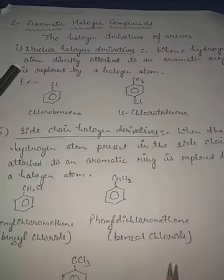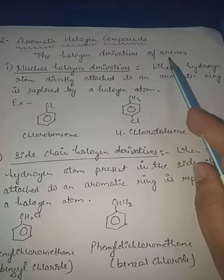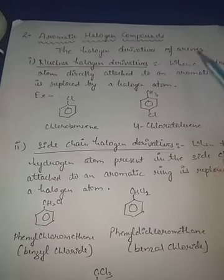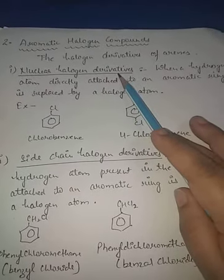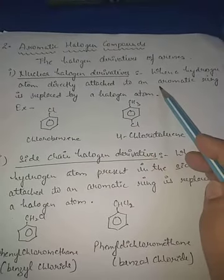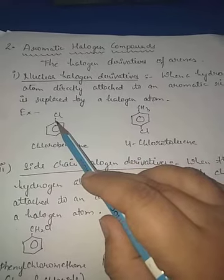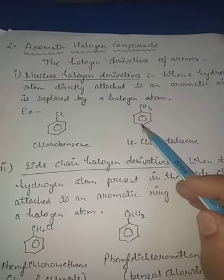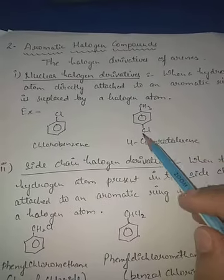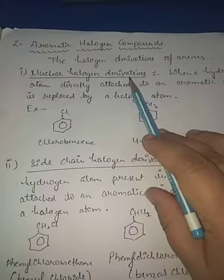Now we will study aromatic halogen compounds - the halogen derivatives of arenes, meaning aromatic hydrocarbons having a benzene ring. These are of two types. The first is nuclear halogen derivatives, where a hydrogen atom directly attached to the aromatic ring is replaced by a halogen atom. Examples include chlorobenzene and 4-chlorotoluene, where chlorine is attached directly to the ring.